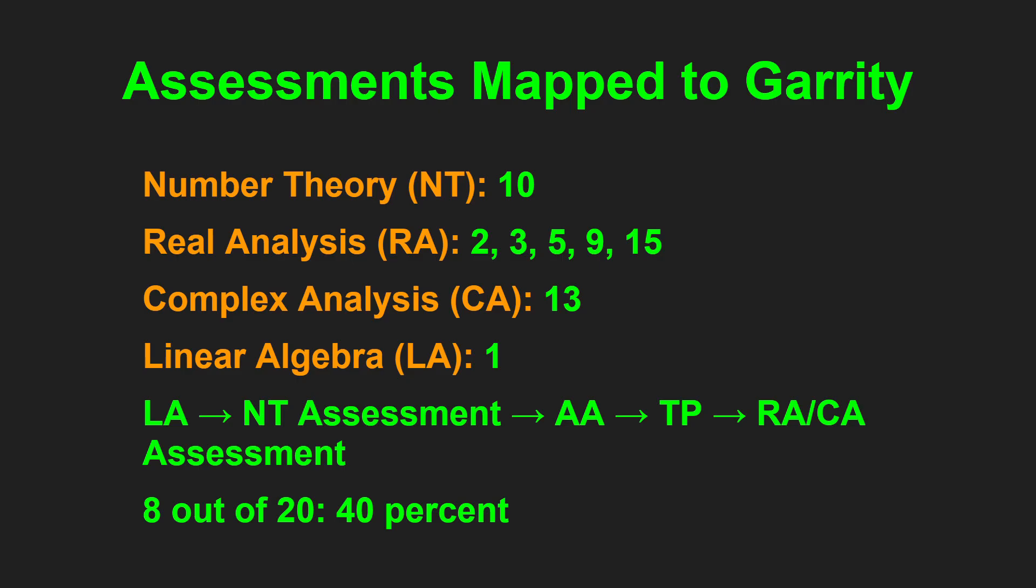So there you have it. When I map my coverage to Garrity and the assessments that I need to make, the ones in orange are the four assessments that I need to make. I need to make a number theory assessment. That's the first one out of the gate, where I need to go back at all the number theory that I covered.